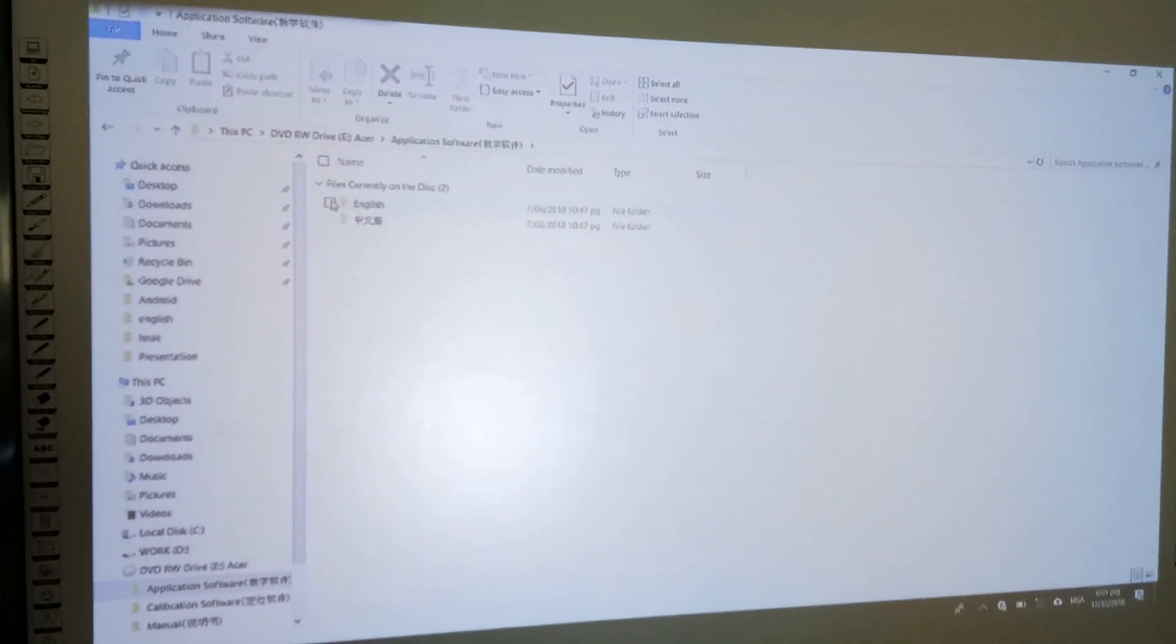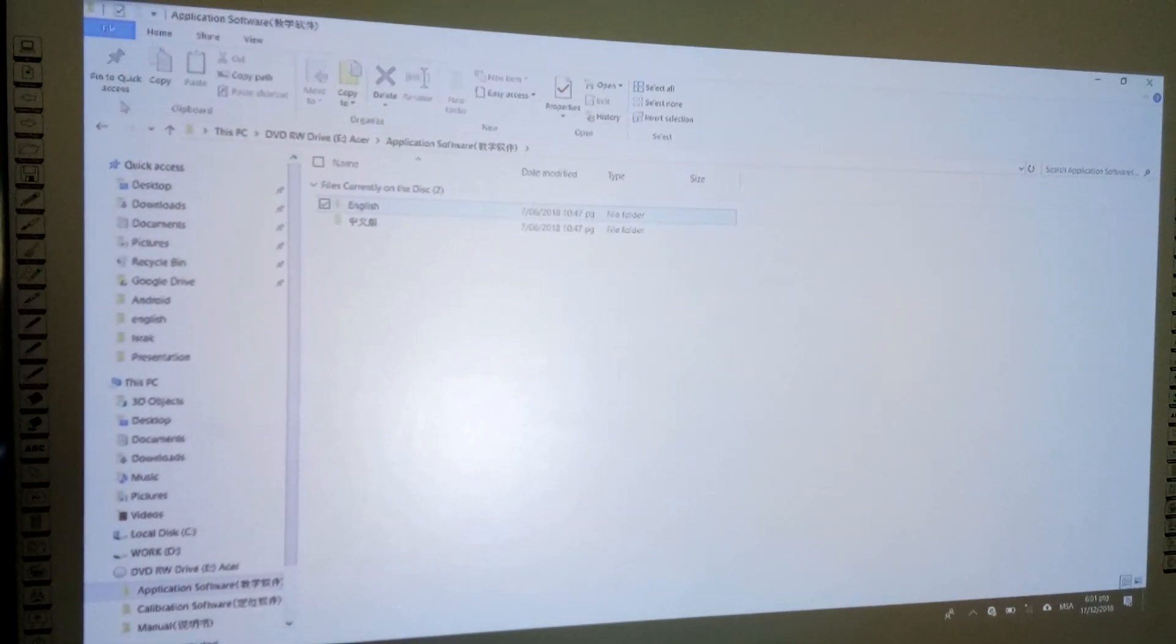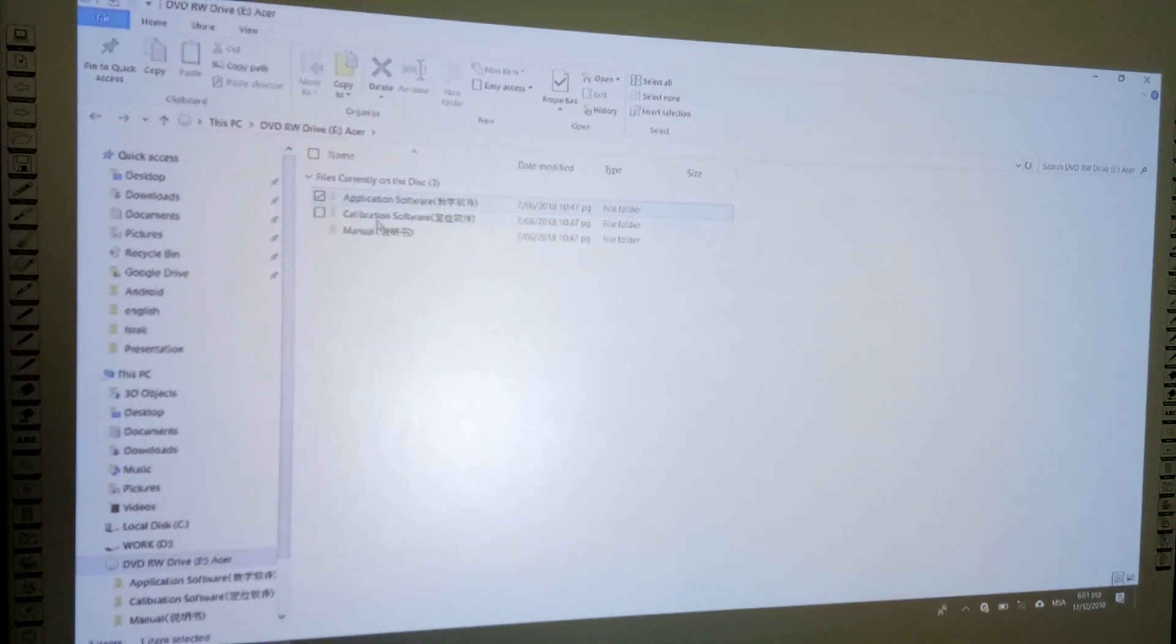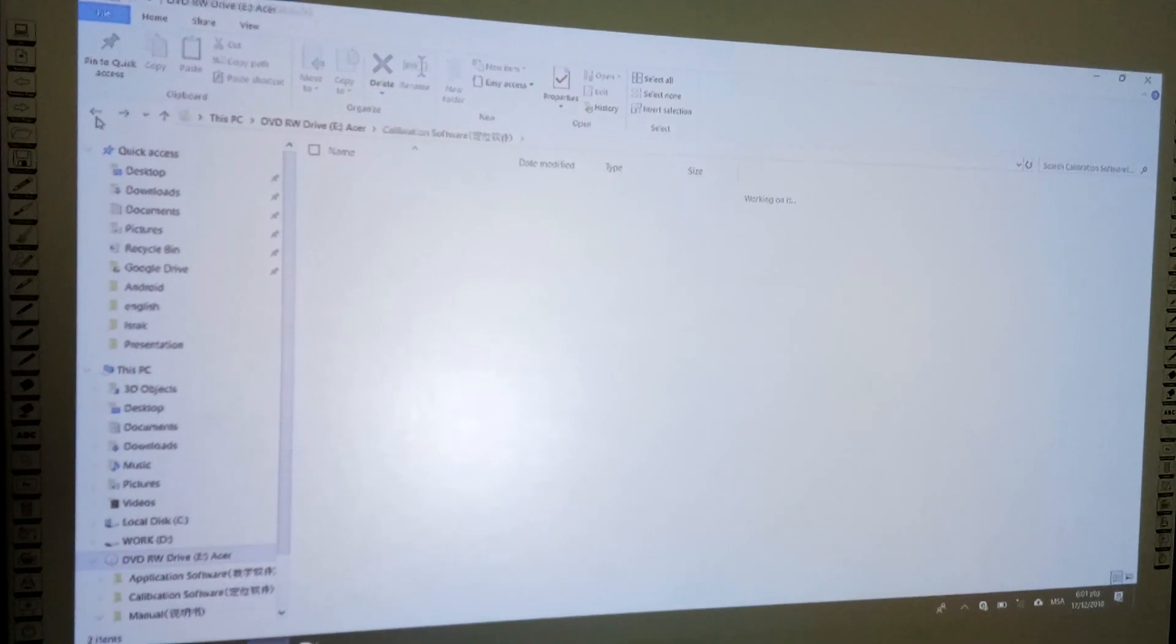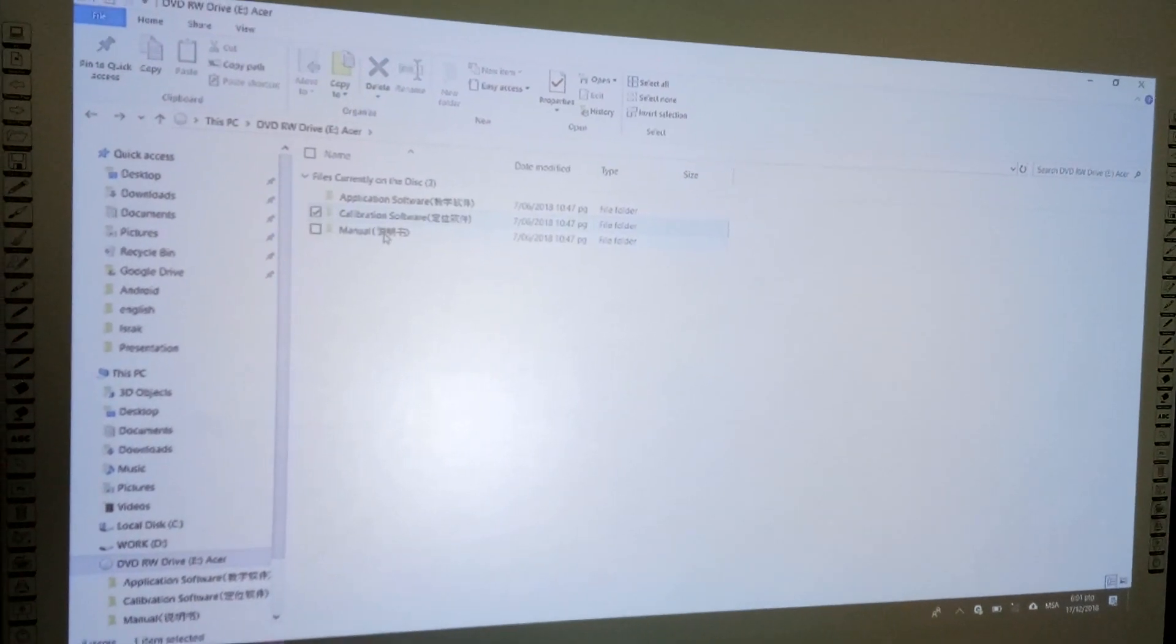kita klik, kita akan klikkan English. Kemudian kita pergi ke calibration software. Dia ada Android dan juga Windows. Seterusnya manual.